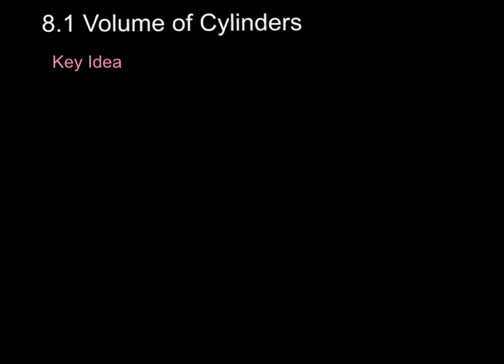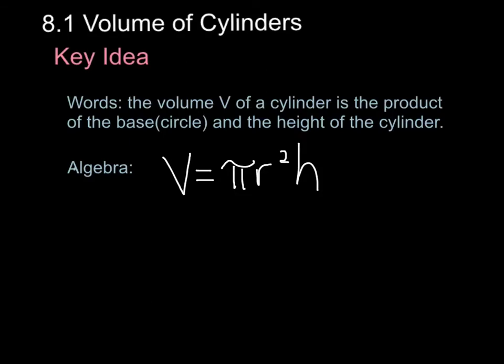So here is your key idea. In words, the volume V of a cylinder is the product of the base, which is a circle, and the height of the cylinder. All you have to do is find the area of the base. On a cylinder, the base is a circle. So to find the area of a circle, you take pi r squared, and then you times it by the height of the cylinder.